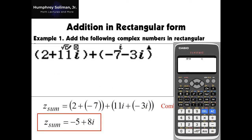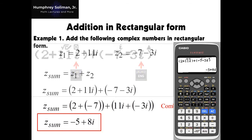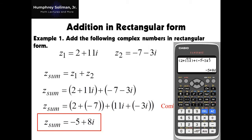After that, we just need to enter the complex numbers that we need to add: the quantity 2 plus 11i, plus the quantity negative 7 minus 3i. Take note, you have to use the ENG button to input the imaginary number i. Then press the equals key to see the answer: negative 5 plus 8i.